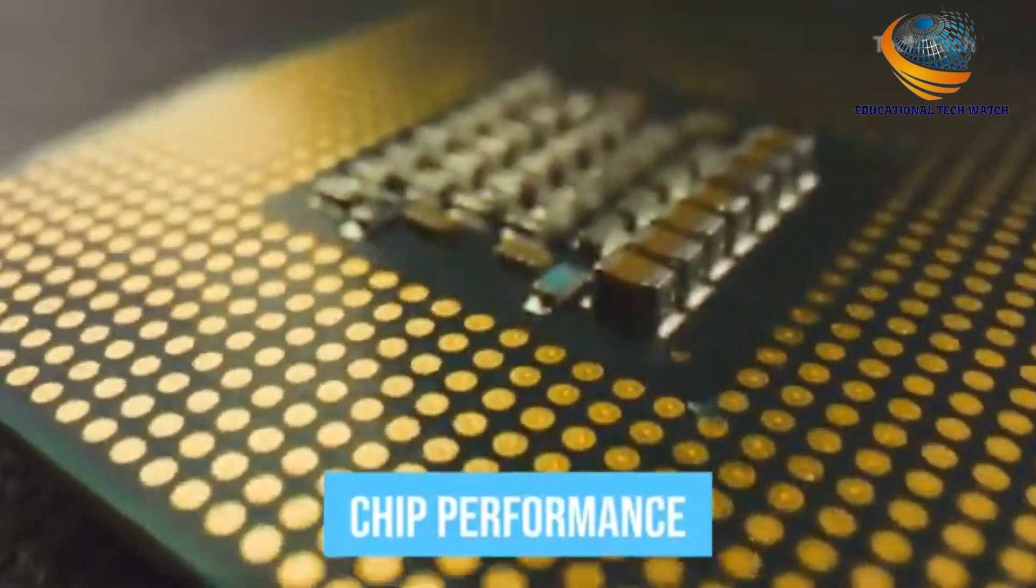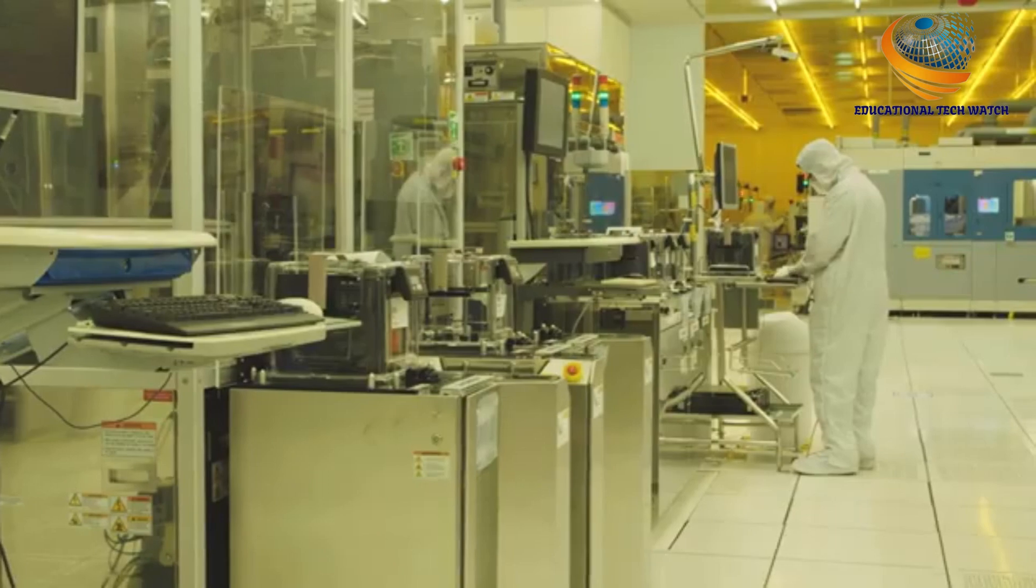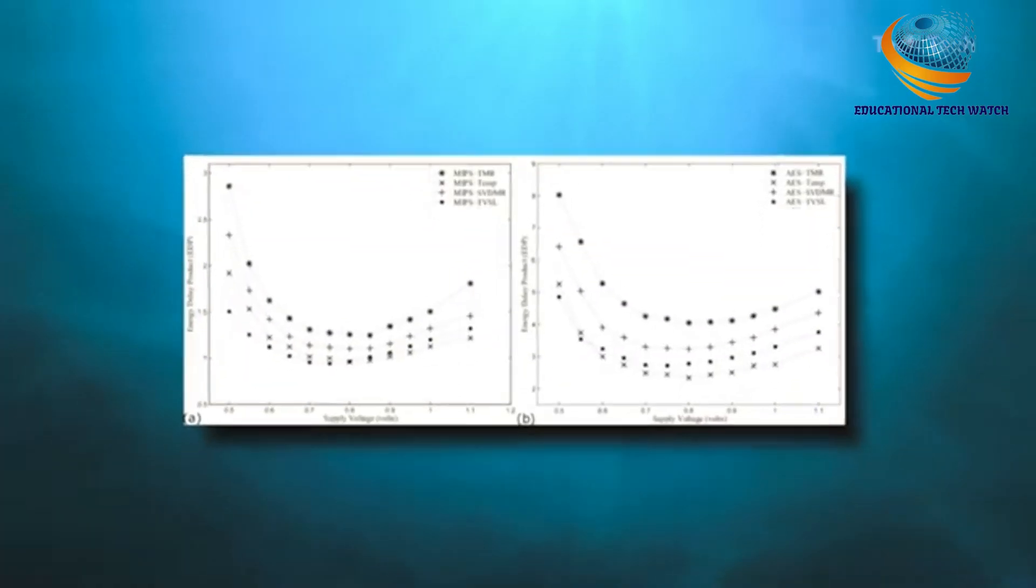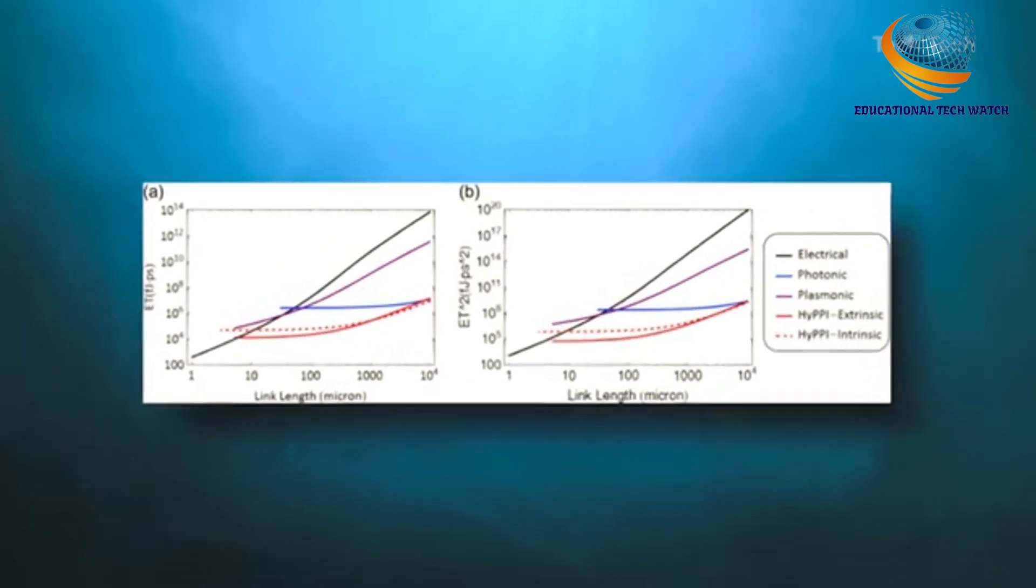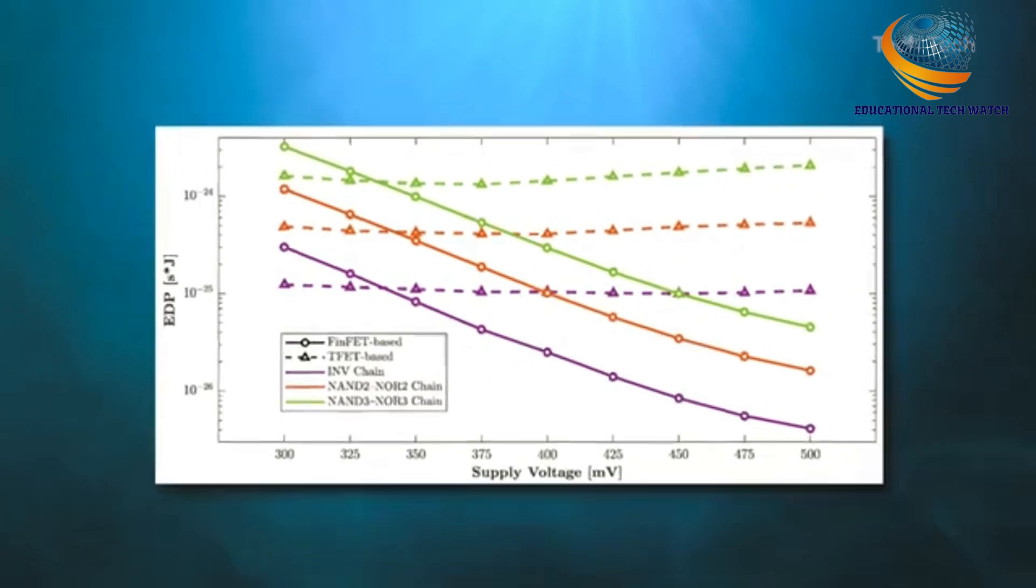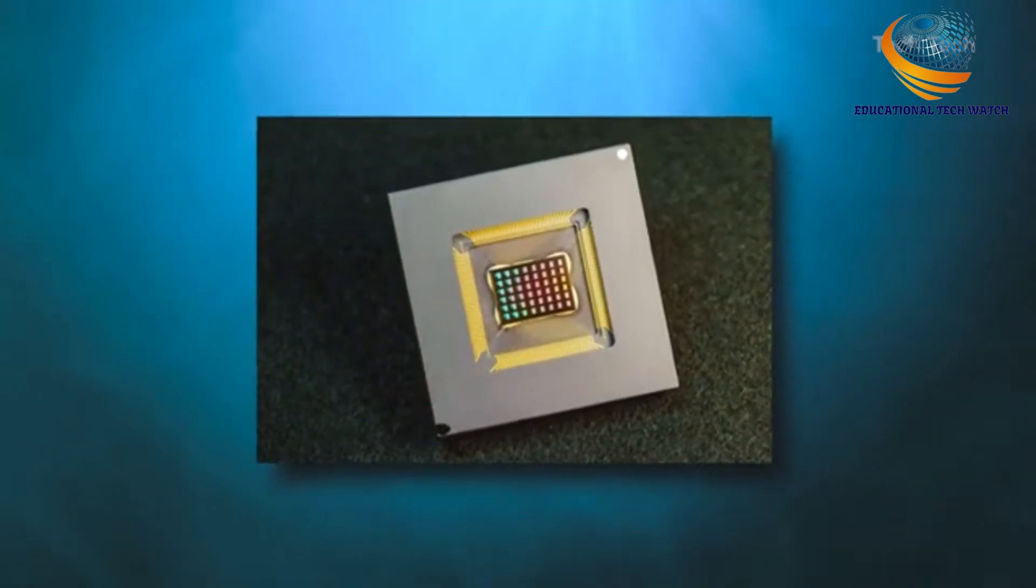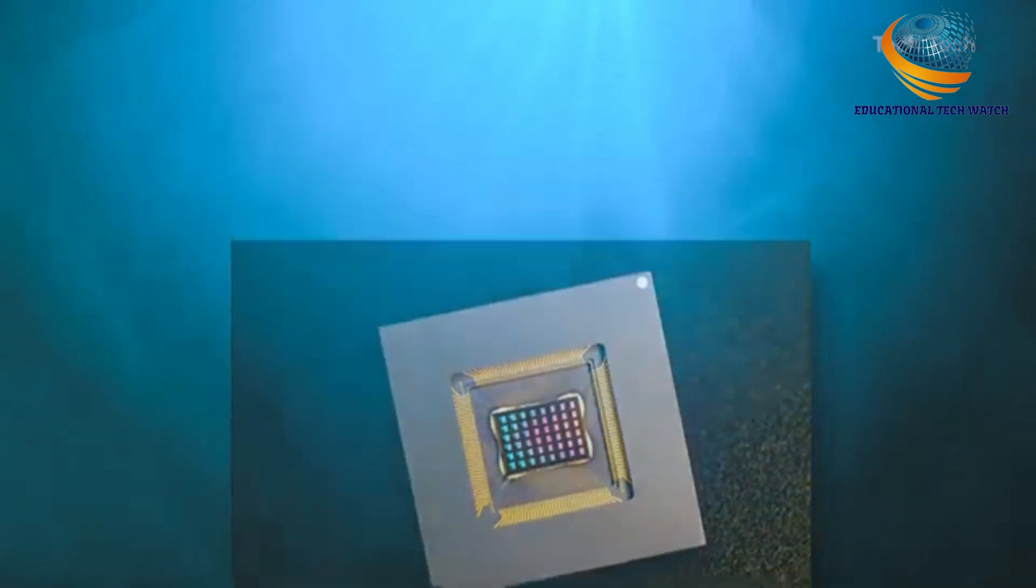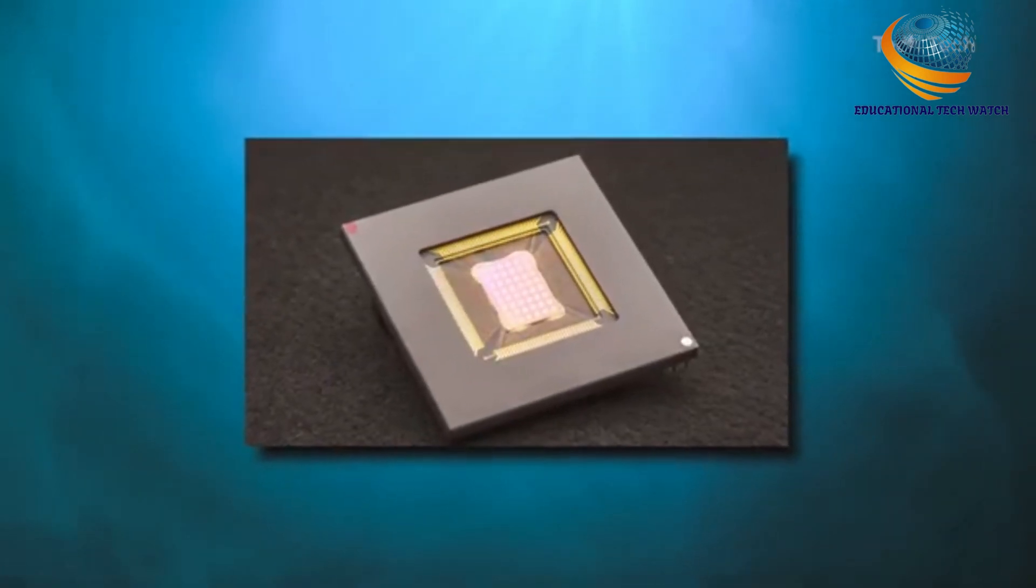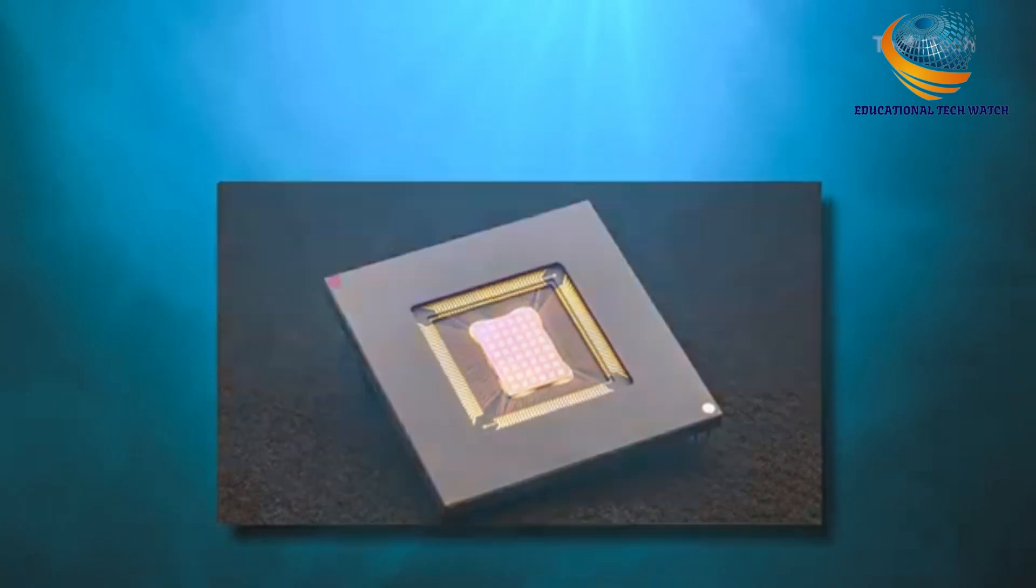Chip Performance. Researchers measured the chip's energy efficiency by a measure known as Energy Delay Product, or EDP. EDP combines both the amount of energy consumed for every operation and the amount of time it takes to complete the operation. By this measure, the Nuram chip achieves 1.6 to 2.3 times lower EDP and 7 to 13 times higher computational density than state-of-the-art chips.